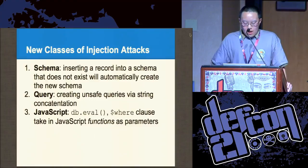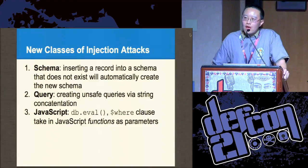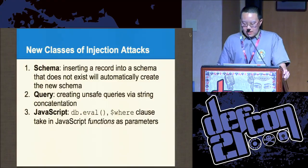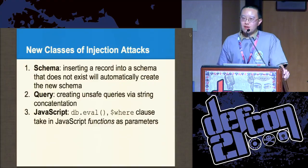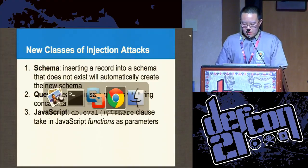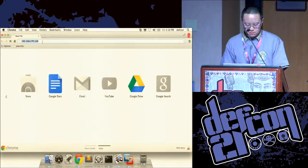I'm going to show you a few demos. I'll do schema last. You can create many unsafe queries very simply by string concatenation. And now this gem — how many of you are good at JavaScript? Learn it. A lot of these NoSQL databases take in JavaScript functions as parameters to search and insert. I'm going to give you an example of using the where clause.